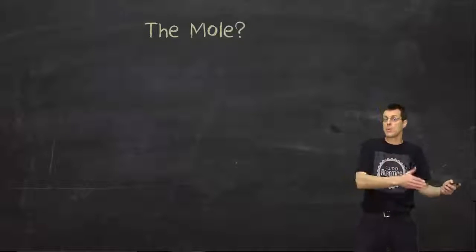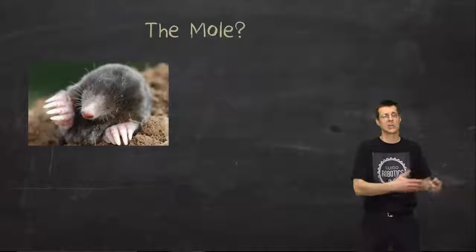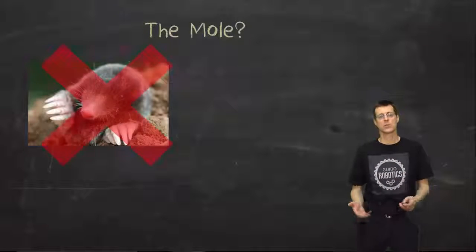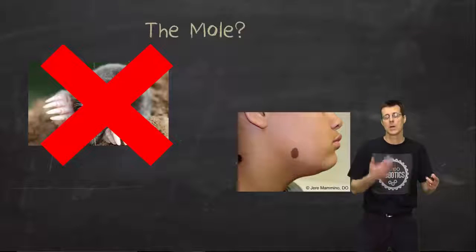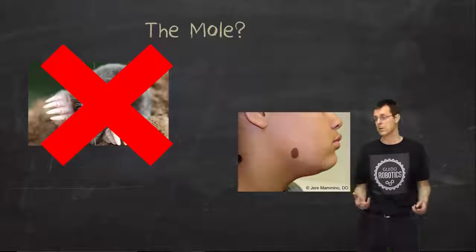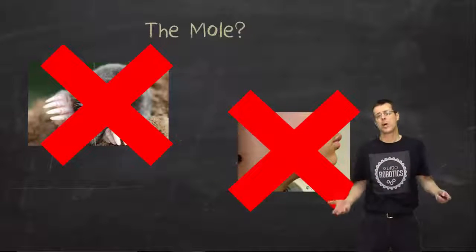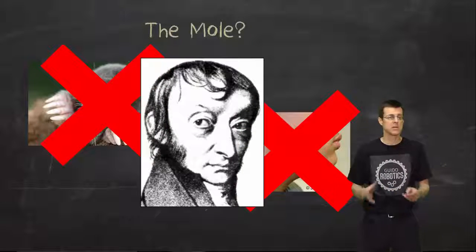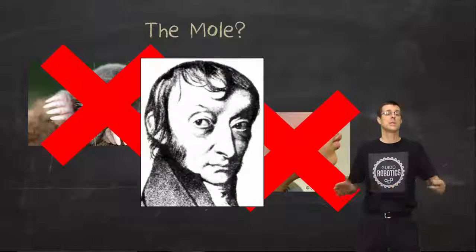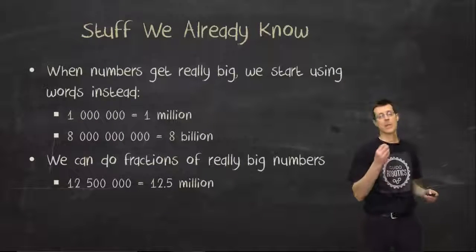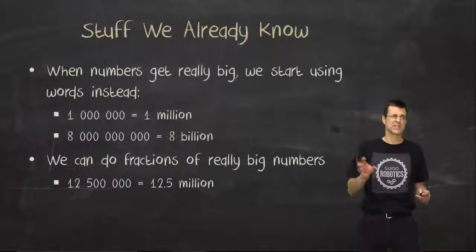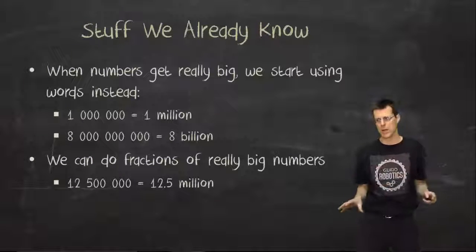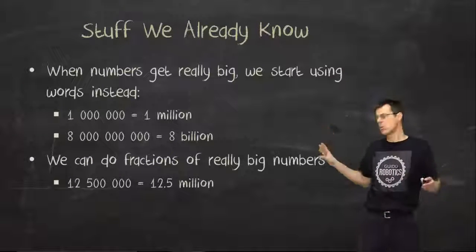Remember that for us in chemistry, we're always dealing with very, very large numbers of very, very small things, so we need to come up with new ways of counting them. So we're going to use the mole. Now, when you hear the word mole up until this point, you've maybe thought about a little critter that digs holes in your garden or somebody who has a mark on their skin. But for us, the mole is actually more closely related to this gentleman right here. His name was Avogadro.